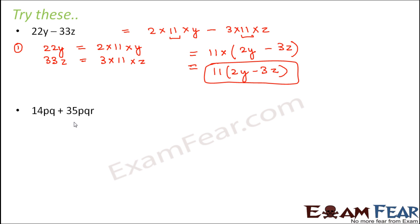14pq plus 35pqr. Step number one: 14pq can be written as 2 into 7 into p into q, and 35pqr is 5 into 7 into p into q into r.